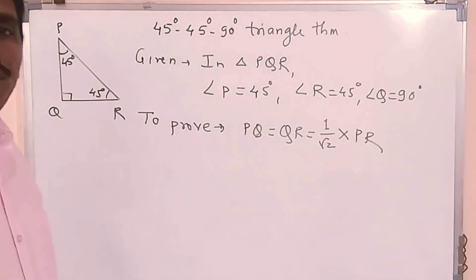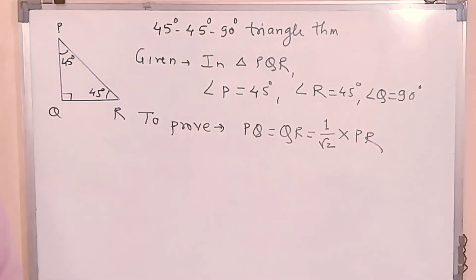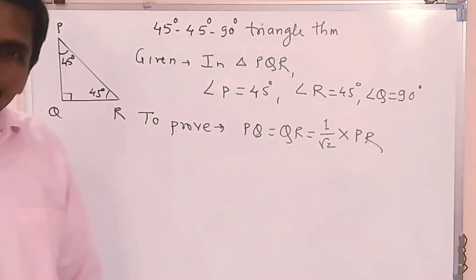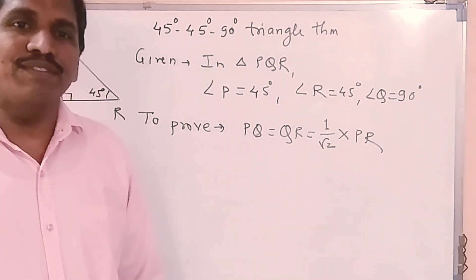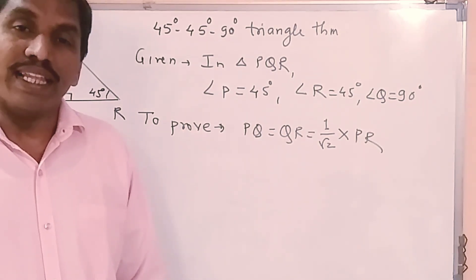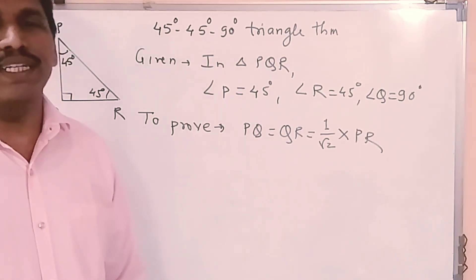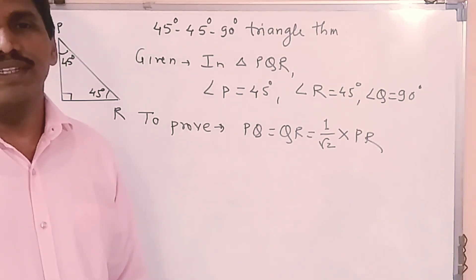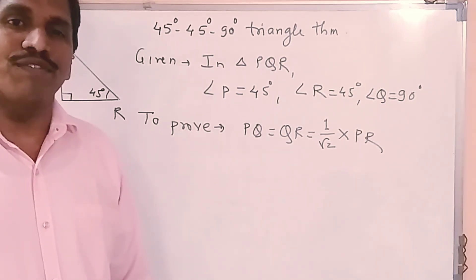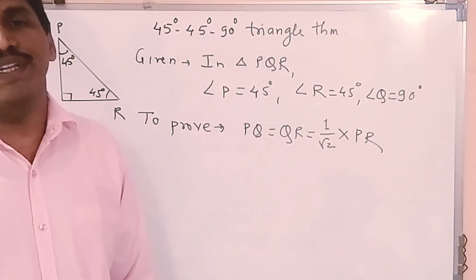We will use the 45-45-90 degree triangle theorem when the measures of angles are 45 degrees, 45 degrees, 90 degrees, and out of the 3 sides, the length of any one side is given, to find the lengths of the remaining two sides.